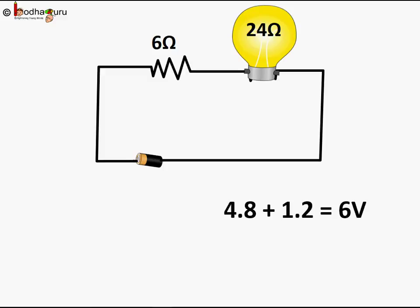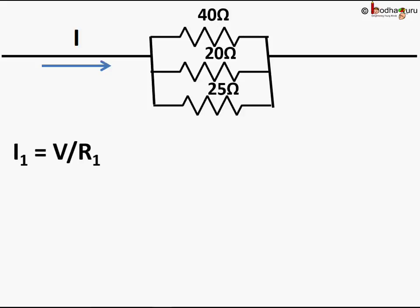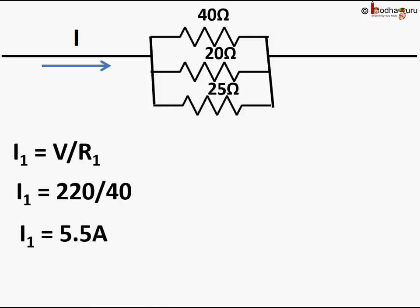So V1 plus V2 is equal to V — this is what we have learned. Let us take another example. What happens when we connect many devices in parallel in real life scenarios? Say three resistors of 40 ohms, 20 ohms, and 25 ohms are connected in parallel to a 220 volt power source. How much current will they draw together? The potential difference across each resistor equals the potential difference across the power source, so for the first resistor I1 equals V by R1, which is 220 by 40, equal to 5.5 amps.